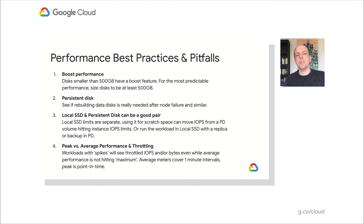That concludes our session today covering best practices for block storage on Google Cloud. With Balanced PD and Extreme PD, we have introduced two new disk types that fundamentally change the price performance profile for general purpose and performance-critical workloads respectively. Together with the substantial improvements in performance for the existing disk types, you can now pick the right disk for your workload, matching the flexibility you already had with our VM families. Thank you.